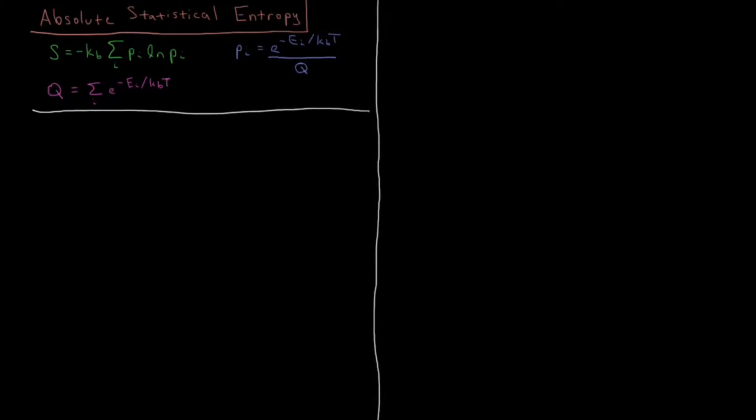We've previously seen that if we know the probability of the system being in a given state, and we know this probability for every state, that we can use the Gibbs entropy formula to get our entropy just by summing the minus Boltzmann factor times sum of probability times log of probability.